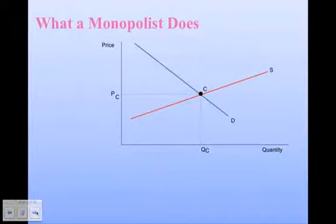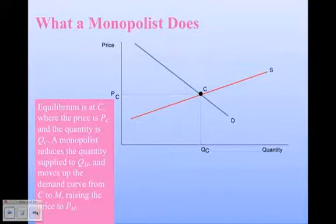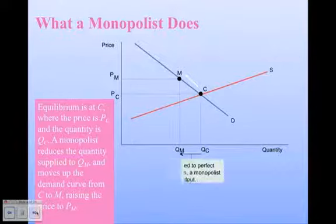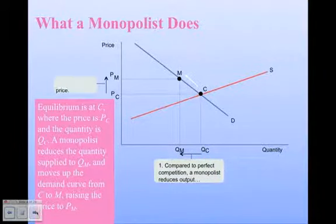You can see where perfect competition — PC and QC — would be. That's where supply and demand are equal. You can also see where a monopolist would be: the price and quantity for a monopolist. A monopolist is going to charge a higher price, and they're not going to have nearly as much quantity being offered. Compared to perfect competition, a monopolist reduces output and raises the price.